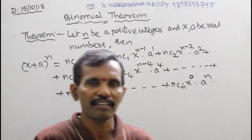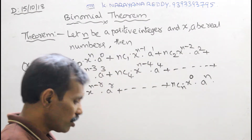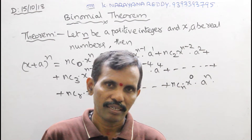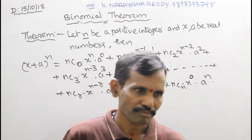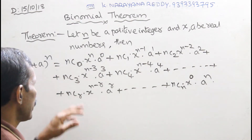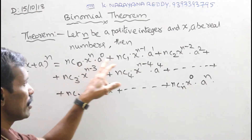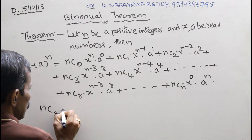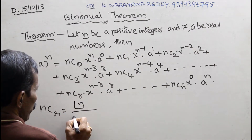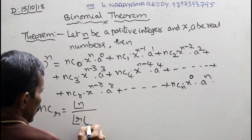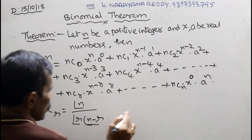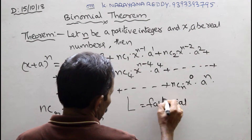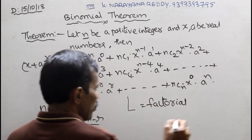You can expand all the terms by using binomials — that is called binomial theorem. In binomial theorem we use ncr. The formula for ncr is: ncr equals factorial n divided by factorial r into factorial n minus r. This symbol is called factorial.